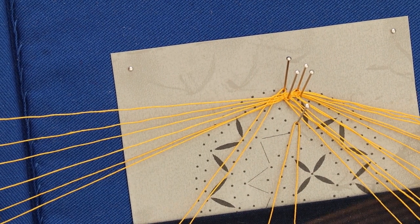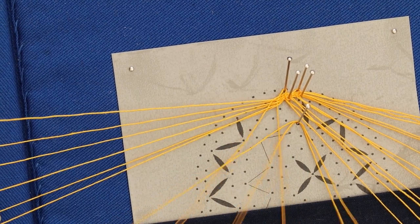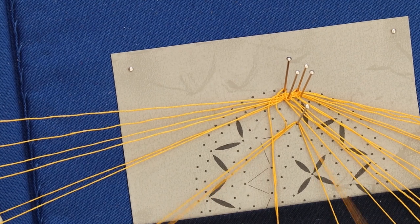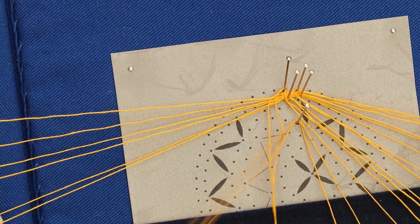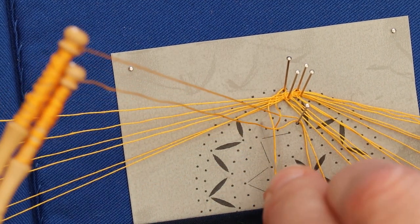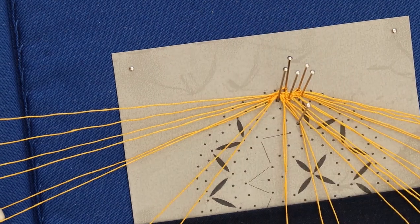Now in Bedfordshire we always add pairs in like this by working through just one of the pairs. It reduces the bulk at the join makes it less noticeable. So adding pairs in for a plait or a leaf, or in this case it will be a tiny plait to go into a trail.